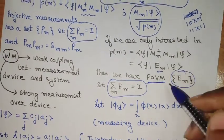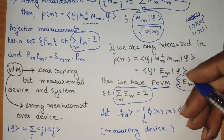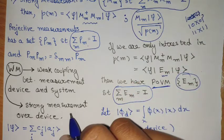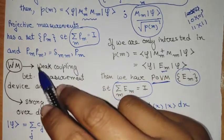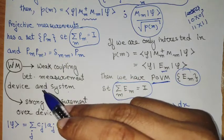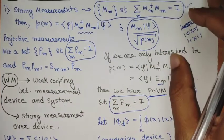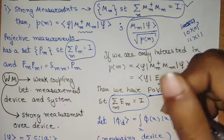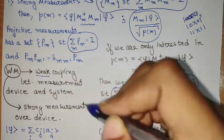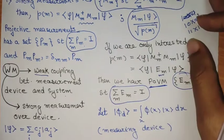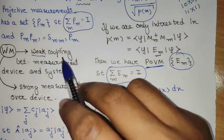These are different kinds of measurement procedures. Now, what is a weak measurement? In a weak measurement, we are interested in both the system and the measurement device. Weak measurement introduces a weak coupling between the measurement device and the system. Once this weak coupling is introduced, to get some information about the system, it performs a strong measurement over the device. Performing a strong measurement over the system causes the system to completely collapse into the eigenstate, but if we perform a strong measurement of the device and it is only weakly coupled, it doesn't cause the entire collapse of the system.